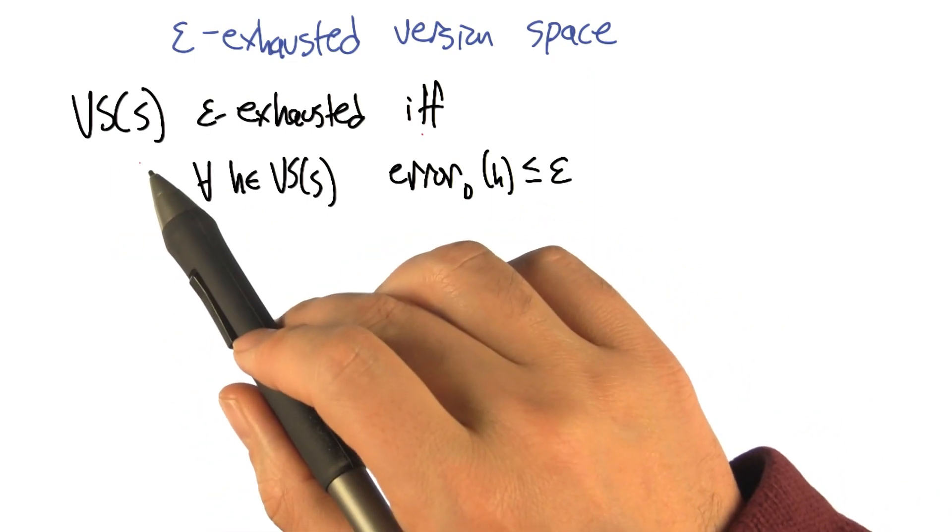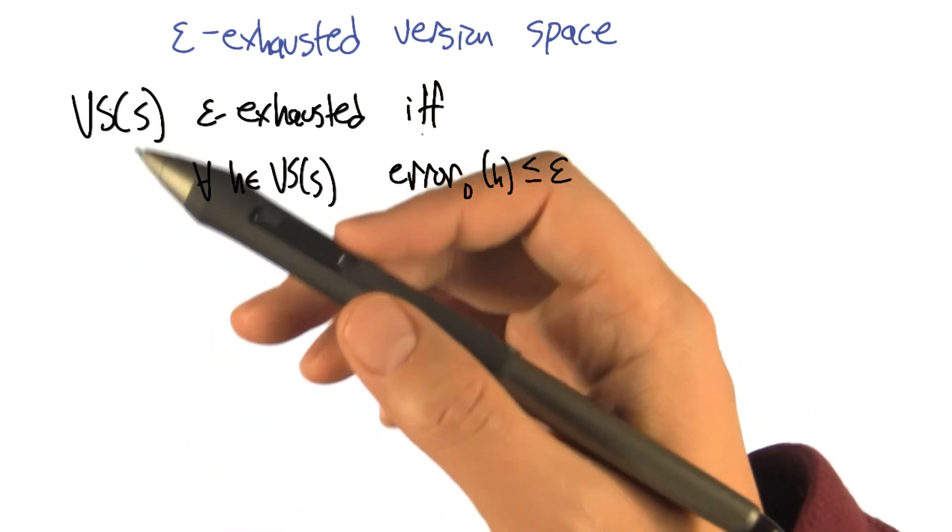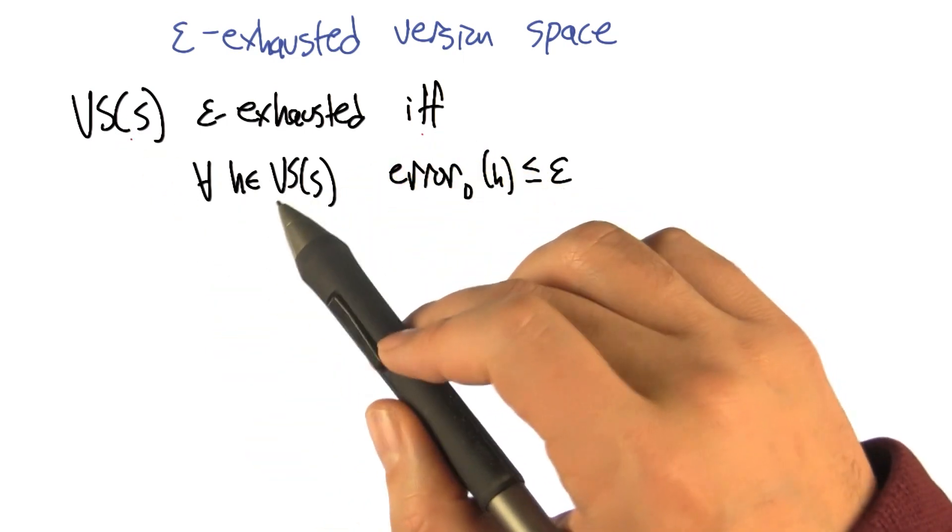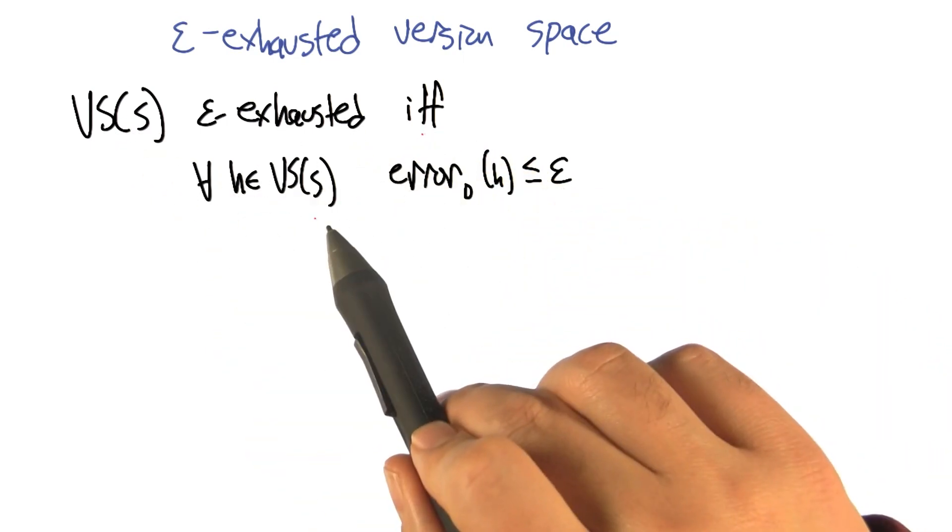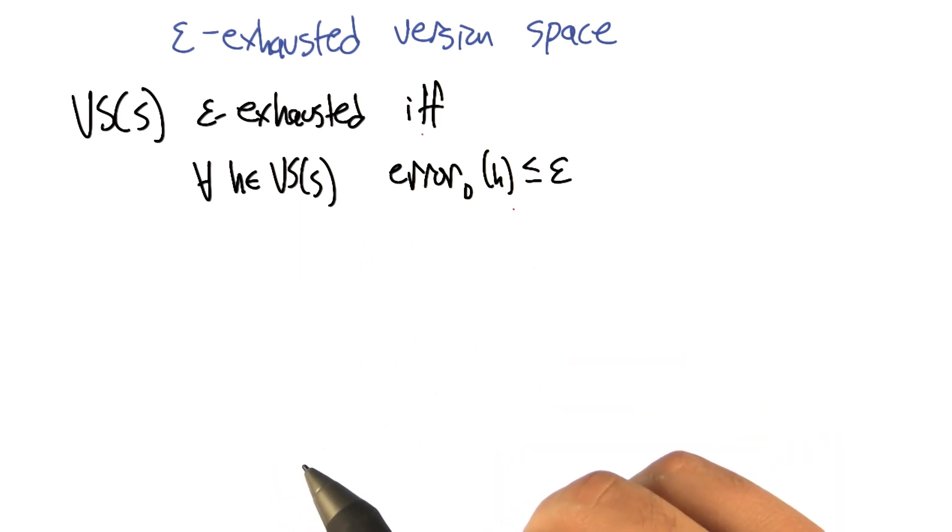So a version space that's derived from a particular sample is considered epsilon exhausted if and only if for all the hypotheses that are in that version space, they have low error.